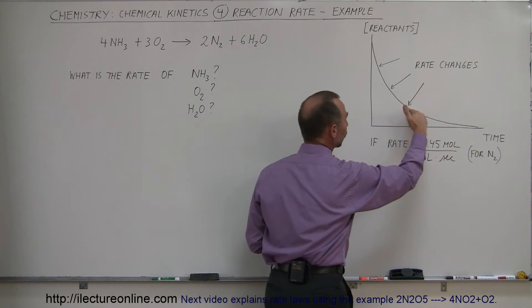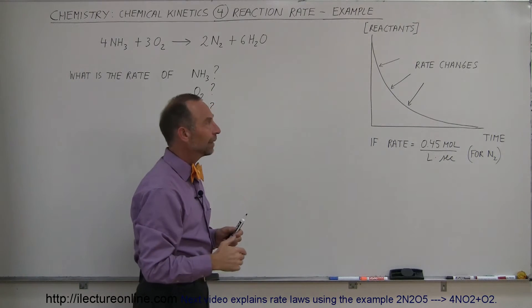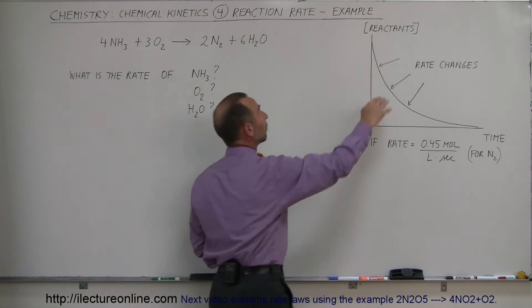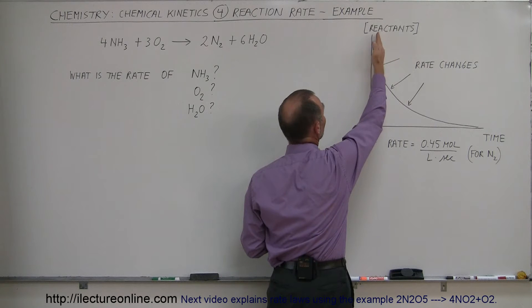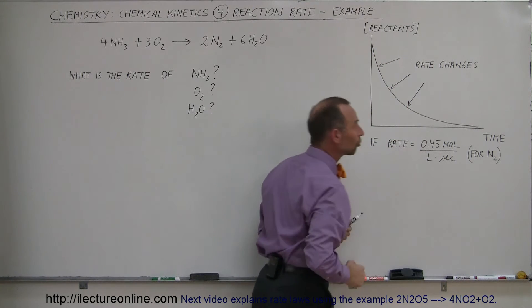The smaller the slope, the slower the reaction; the steeper the slope, the faster the reaction. And it's definitely a function of the concentration of the reactants. As the concentration diminishes, as the reactants are being used up, the rate of the reaction slows down.